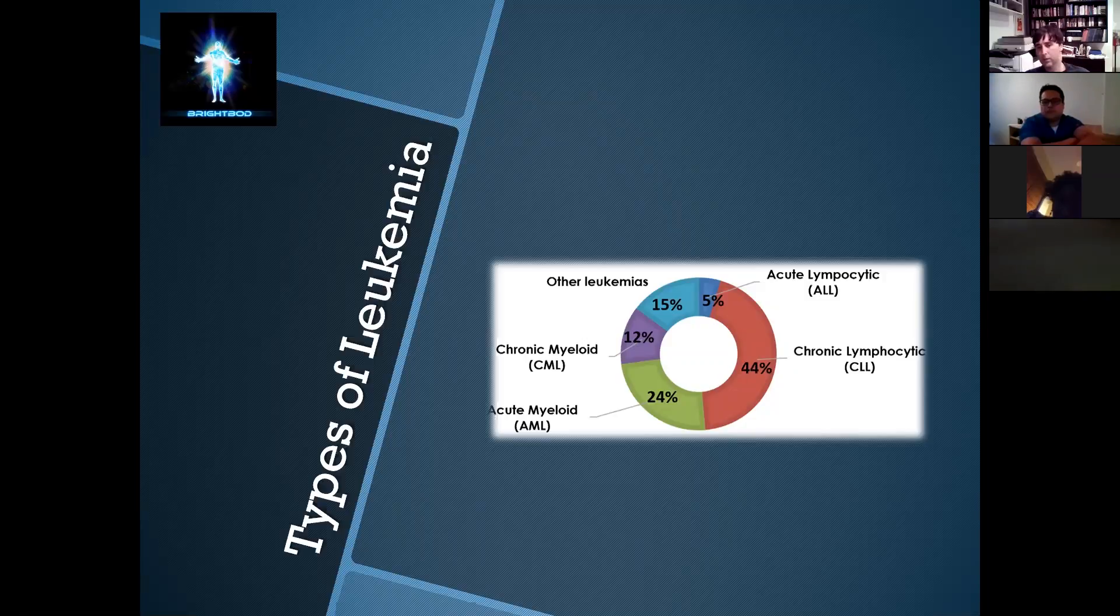There are four main types: we have the acute lymphocytic leukemia, chronic lymphocytic leukemia, chronic myeloid leukemia, and acute myeloid leukemia. As you can see, the most frequent one is the chronic lymphocytic leukemia, and unfortunately the least is the acute lymphocytic leukemia.